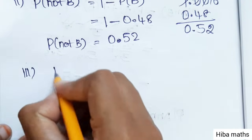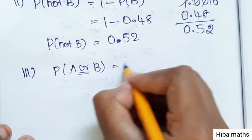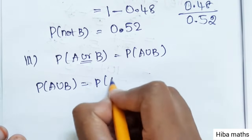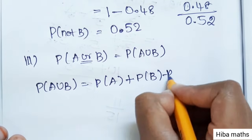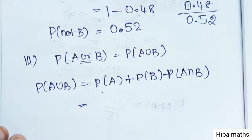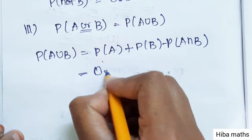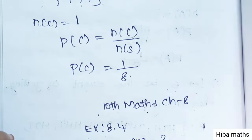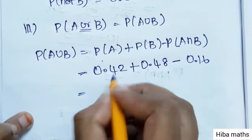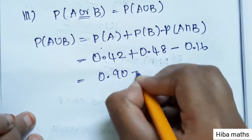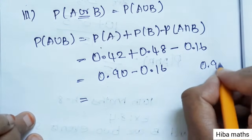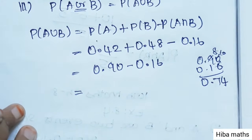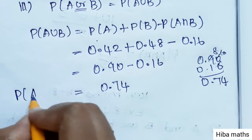Third part: P(A or B), which is P(A union B). Using the formula P(A union B) = P(A) + P(B) minus P(A intersection B), we get 0.42 plus 0.48 minus 0.16. First, 0.90 minus 0.16 equals 0.74. So P(A union B) = 0.74.